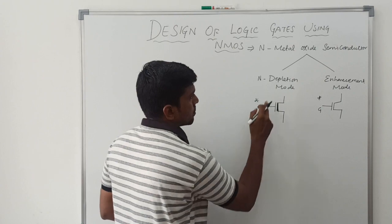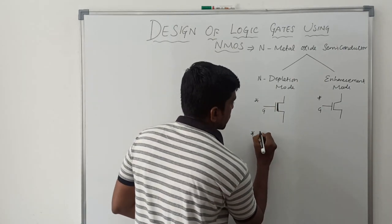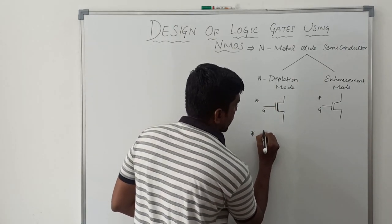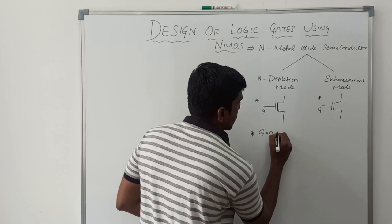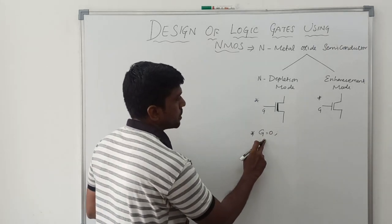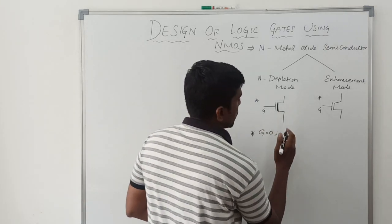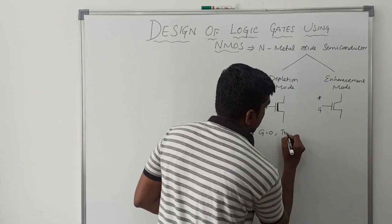The depletion mode transistor operates when the gate voltage is 0. When the gate voltage is 0, the depletion mode transistor is turned on.